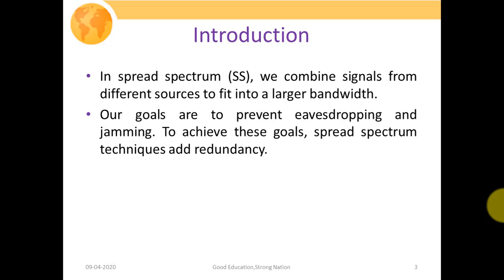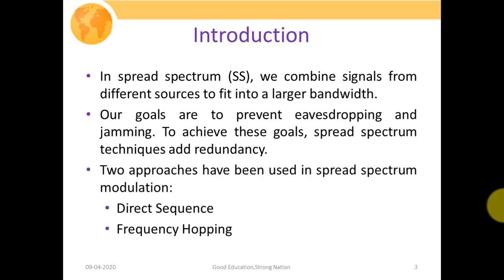In our earlier lecture, we studied that in spread spectrum systems we basically combine signals from different sources to fit into a larger bandwidth. The idea is to expand the signal bandwidth with the help of a secondary signal, or a PN sequence. Our goals are to prevent eavesdropping and jamming, to make communication more secure, and to restrict unauthorized access. Spread spectrum systems add redundancy, and two approaches are used: direct sequence and frequency hopping.